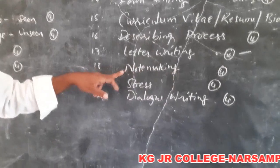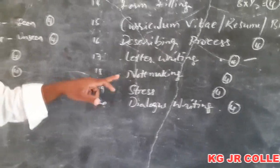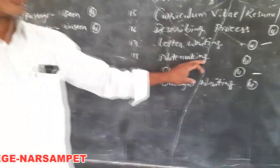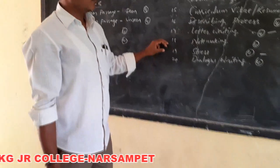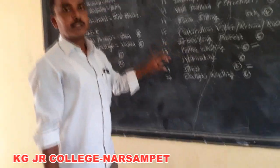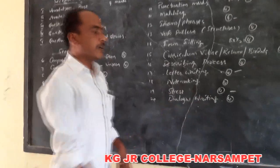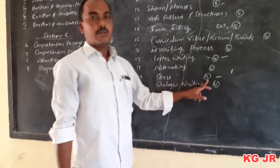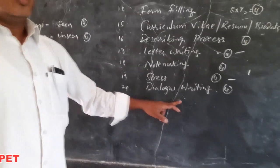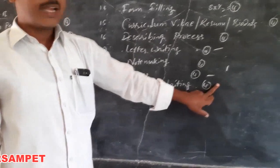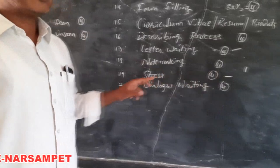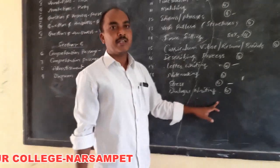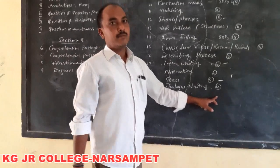Next is word stress. Stress is applied to a word which has more than one syllable — wherever you use breath sound very forcefully, that should be identified with a vertical mark, and that is called stress. You have to attempt any four and you can get four marks. Finally, dialogue writing — two dialogues will be given and you have to write one appropriately. The first and last lines must be written appropriately and the dialogues should not be too lengthy.